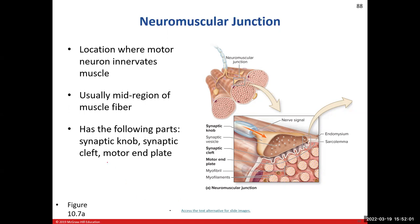The neuromuscular junction is normally in the mid-region of the muscle fiber. Its components include the synaptic knob of the motor neuron, the motor end plate of the muscle fiber, and the space between them — the synaptic cleft. All of that is included in our motor unit.